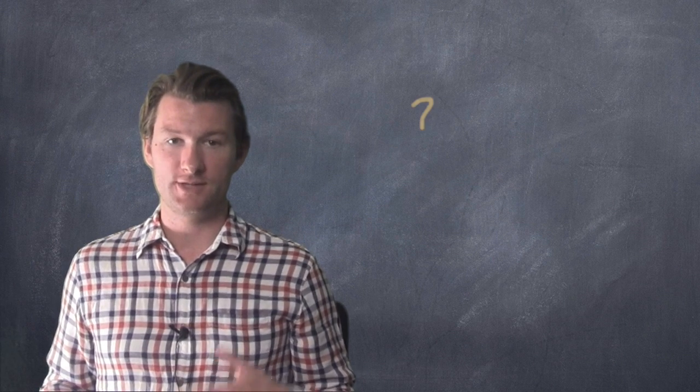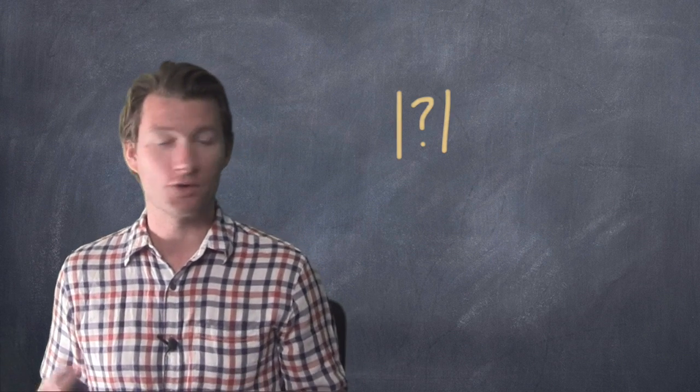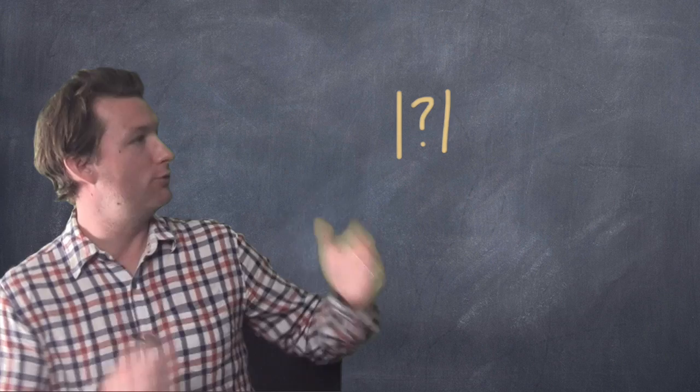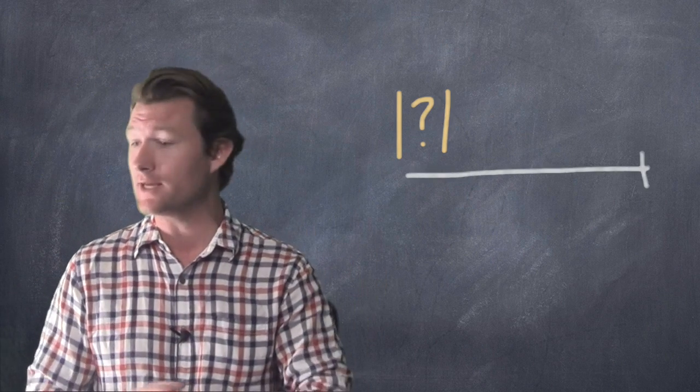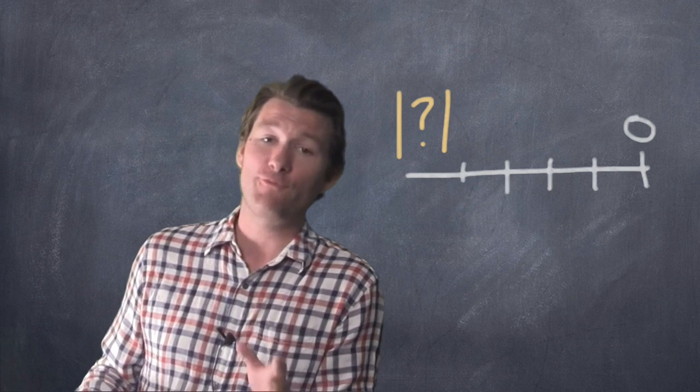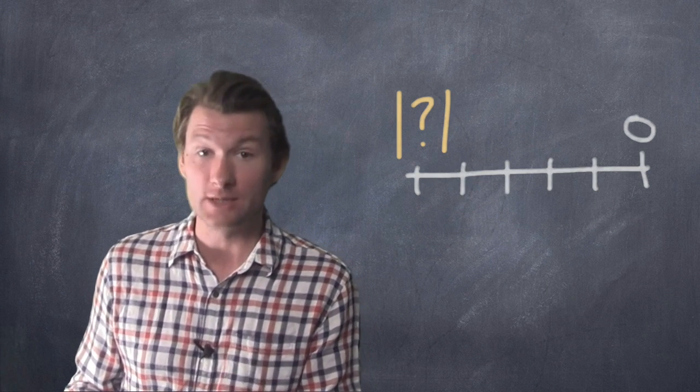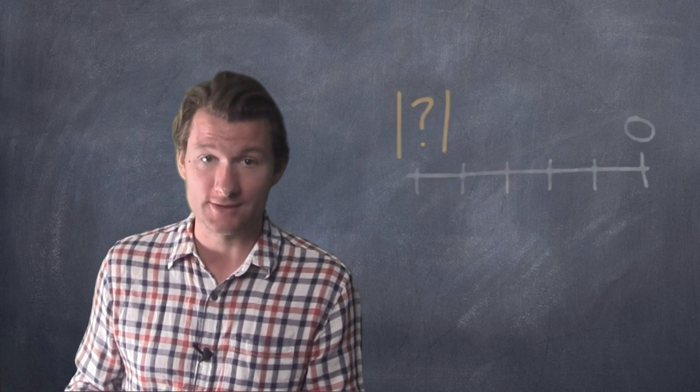The absolute value of a number means how far it is away from zero, and you'll see it in these symbols, these two vertical lines, that means absolute value. When you're dealing with absolute value, you've just got to ask yourself one question: How far away is that number from zero? And that's going to give you your answer.